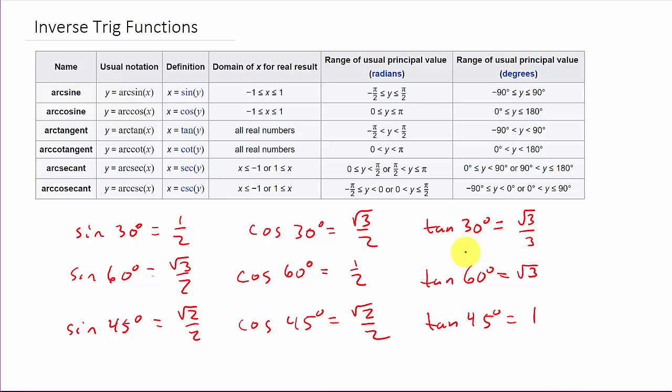Try to learn them without memorizing the entire unit circle. Just know the special angles and you'll do so much better with trig. If you can memorize the basic ones — 30, 45, and 60 degrees for sine, cosine, and tangent — you're set. Let's go ahead and get started.